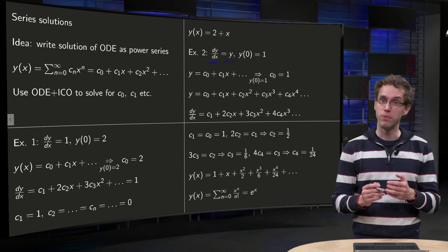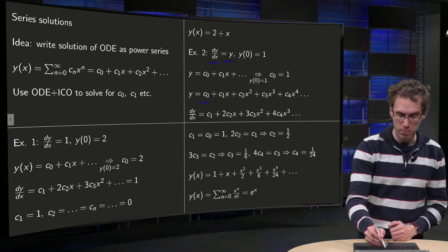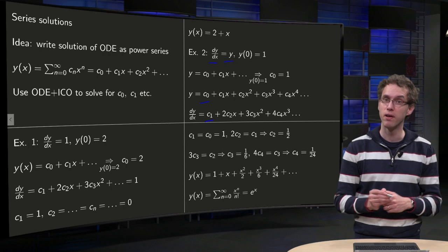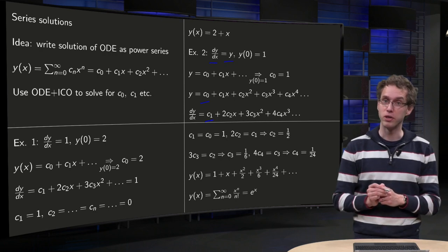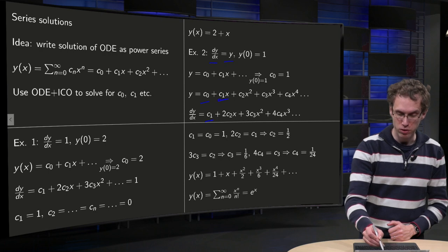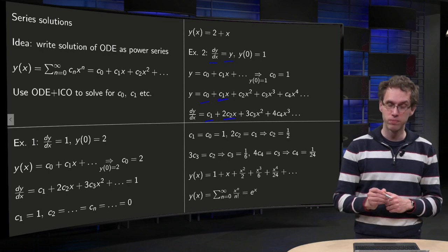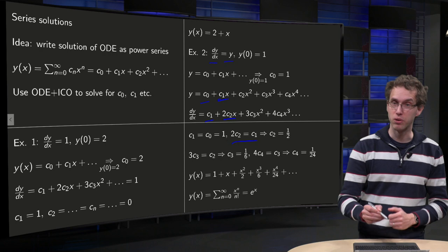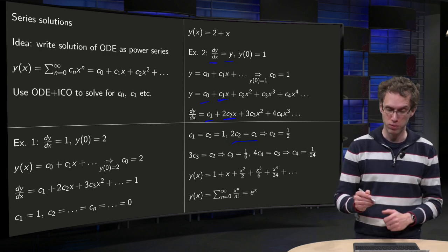So we have to compare the constants in y and y', so c0 equals c1, c0 equals 1, so c1 is also equal to 1. Then c1 equals 2 times c2, so 2 times c2 equals c1, so c2 equals 1/2, because c1 equals 1.